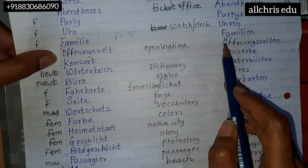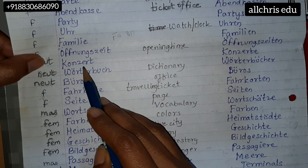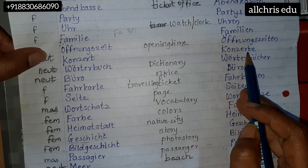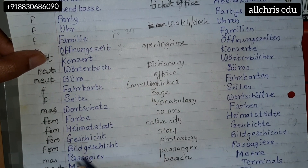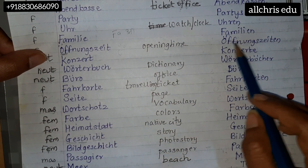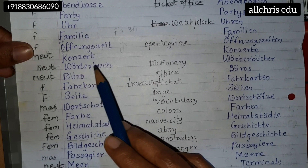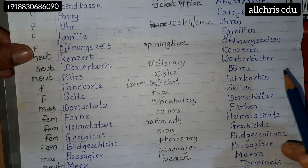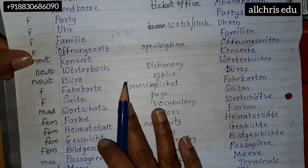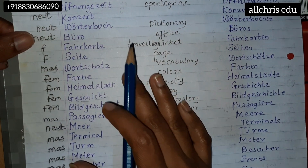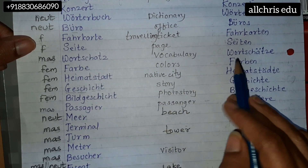Öffnungszeiten. Konzert — try to make the correct sound. Konzert. Wörterbuch, Wörterbücher. Büro, Büros. Fahrkarte, Fahrkarten. Zeitung — 'zai' like Aishwarya Rai. Zeitung, Zeitungen.